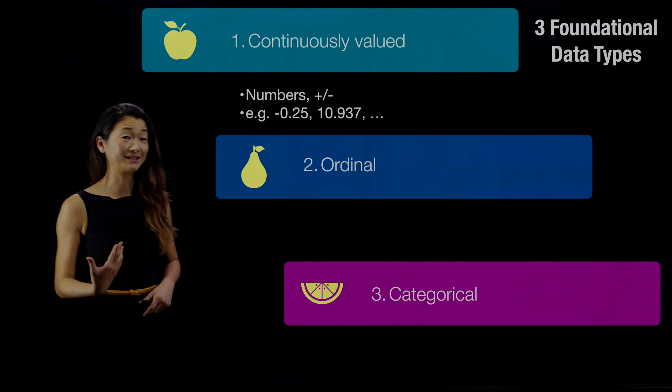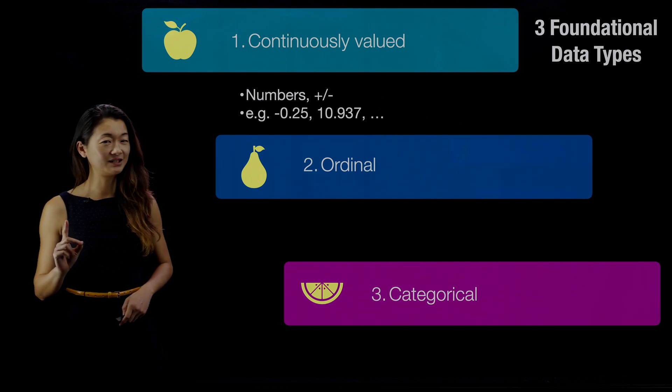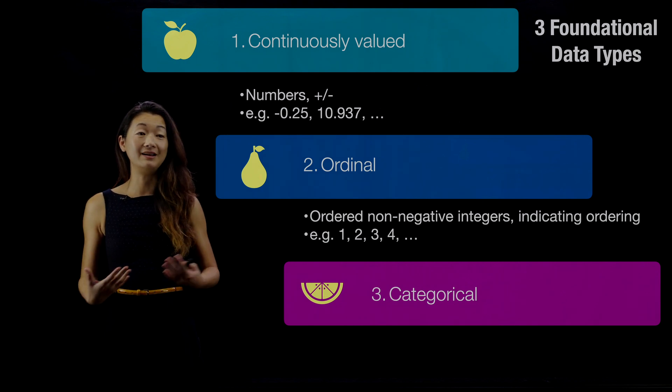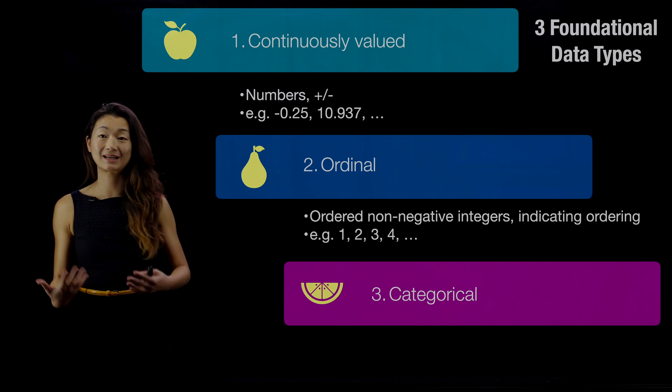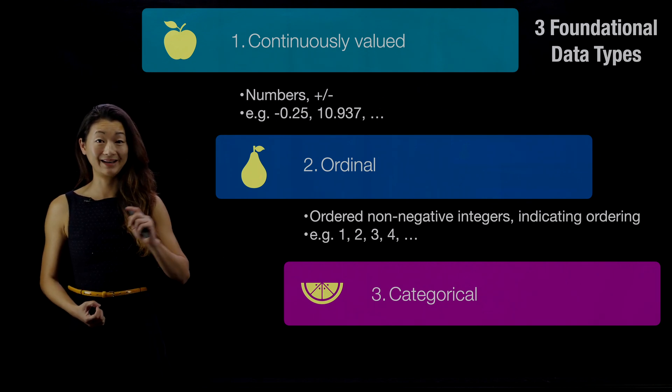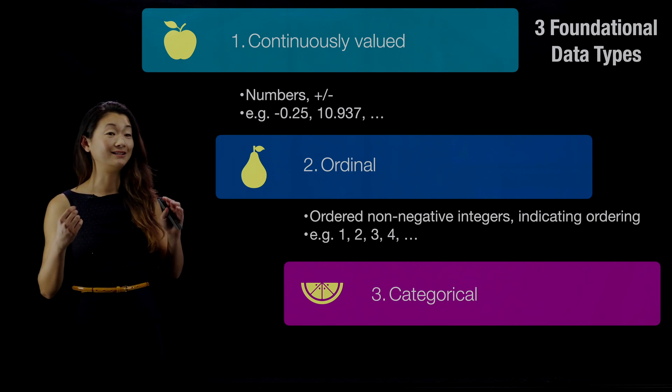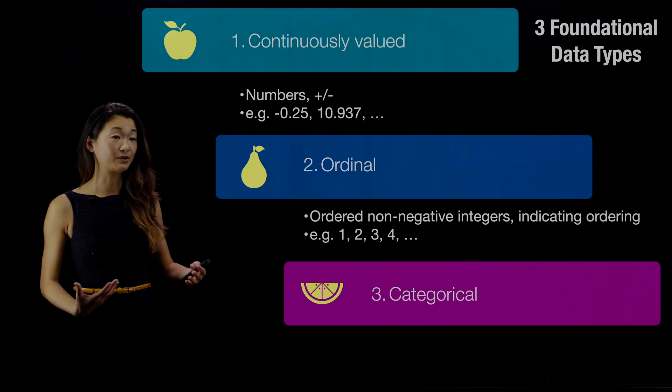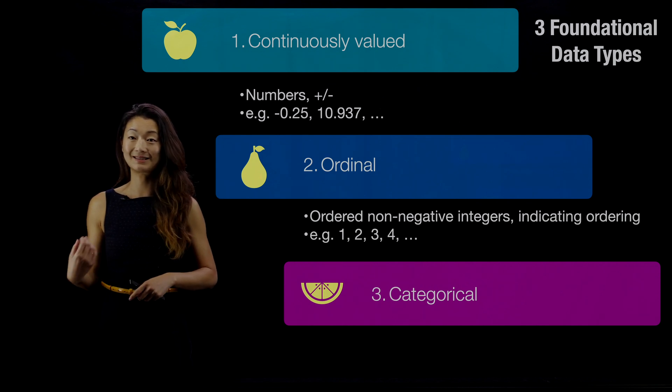The second data type is ordinal. Now ordinal, on the face of it, sounds a lot like continuously valued, but there's an important difference. Ordinal numbers are ordered non-negative integers, and they indicate orderings, like you come in first place, second place, third place, and so on. You cannot come in one and a half place, and you can't come in negative 2.75 place. So they have to be non-negative integers, whole numbers indicating ordering, which is especially important for a reason I'm going to tell you about in the next second.